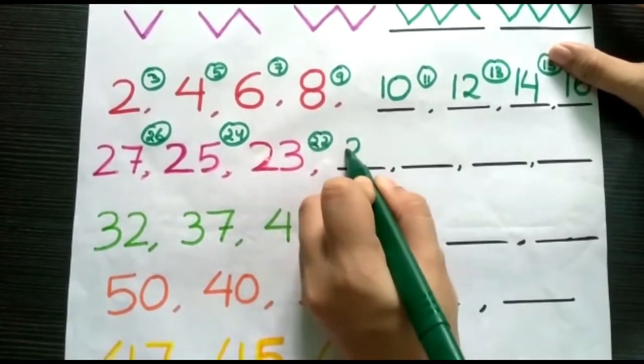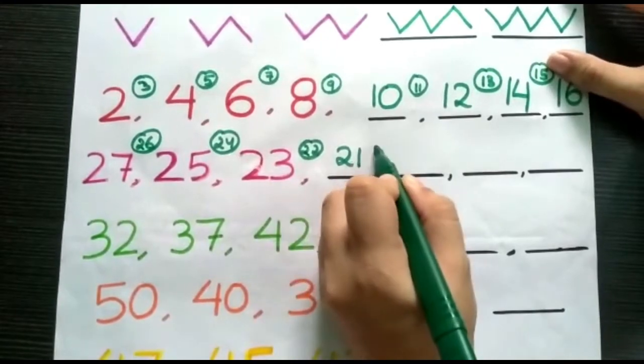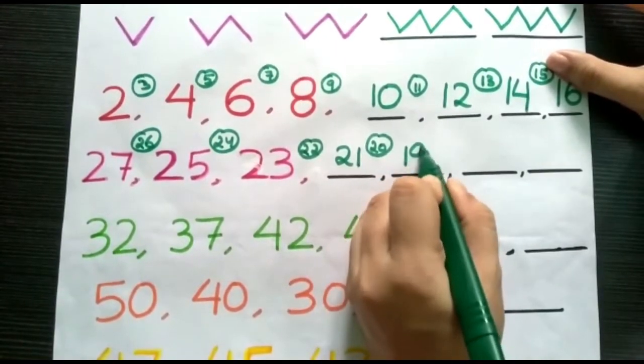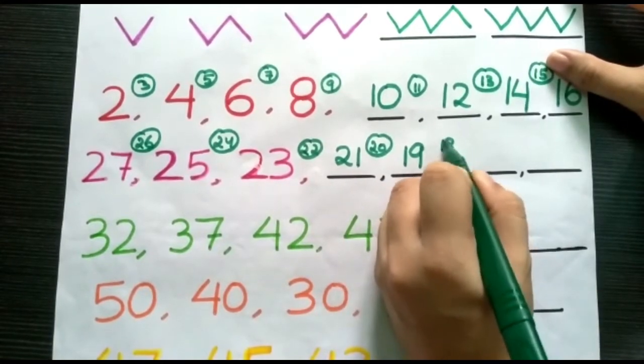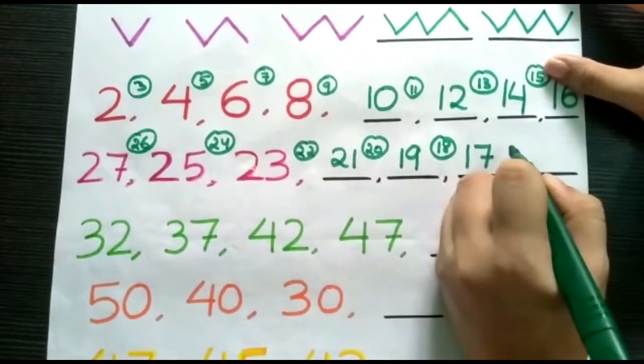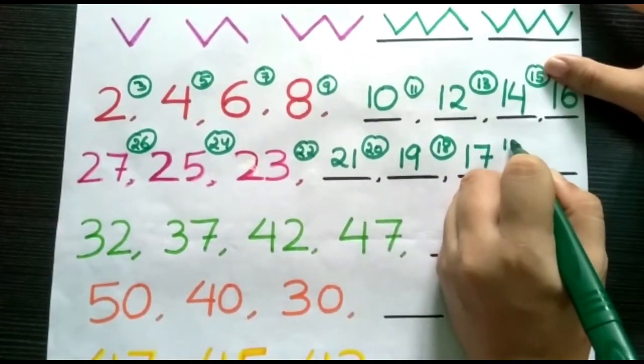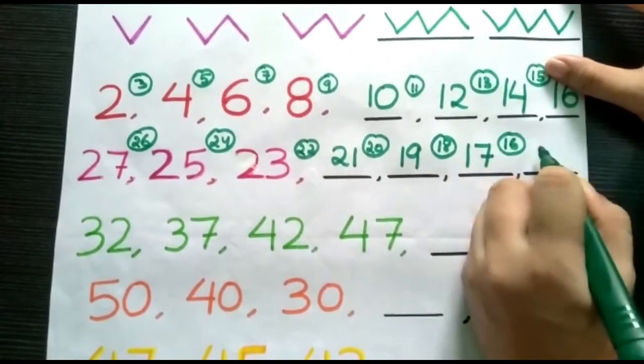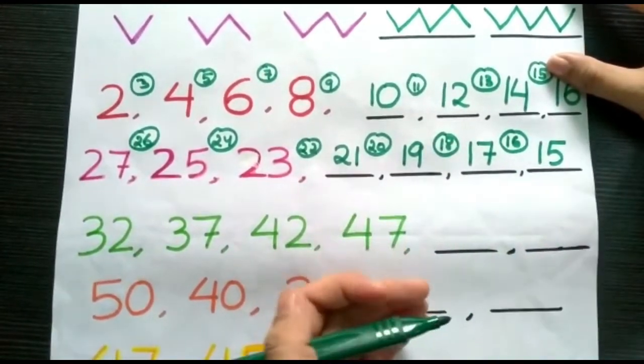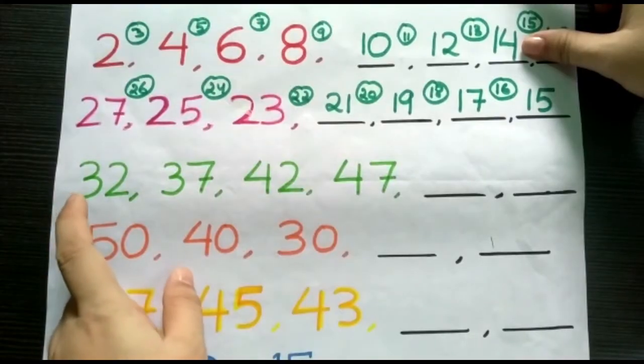So, next number will be 21. And this missing number will be 20. Next, 19. And missing number will be 18. Next will be 17. And missing number will be 16. And next will be 15. So, that's how the pattern continues.